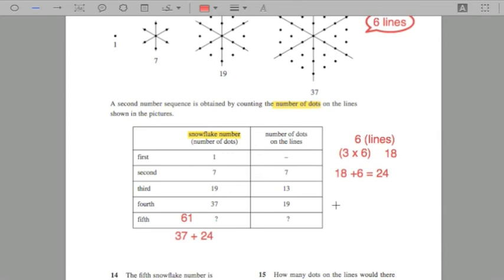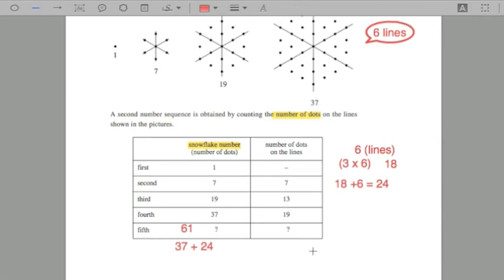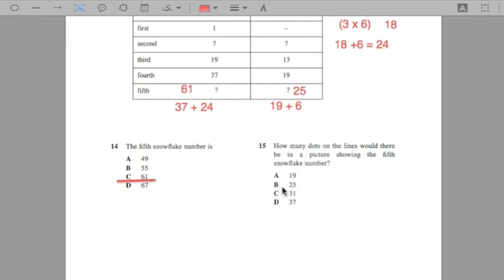All we have to do is because we know that there's six dots because there's six lines, all we have to do is 19 plus six. So 19, 20, 21, 22, 23, 24, 25. And it should be this, 25. So there's the easy way to go about these types of questions.